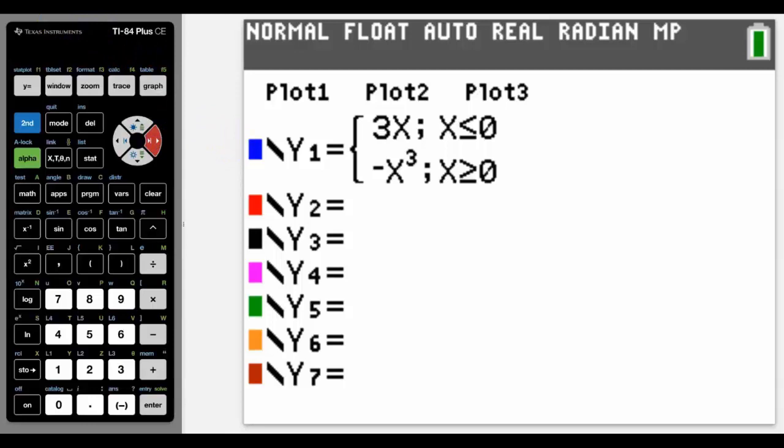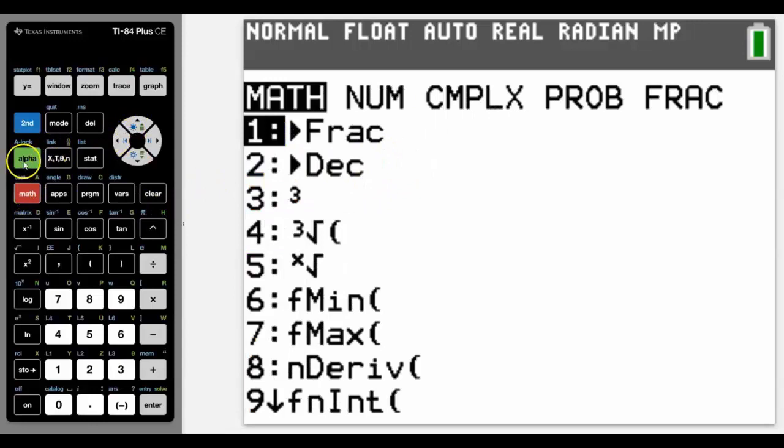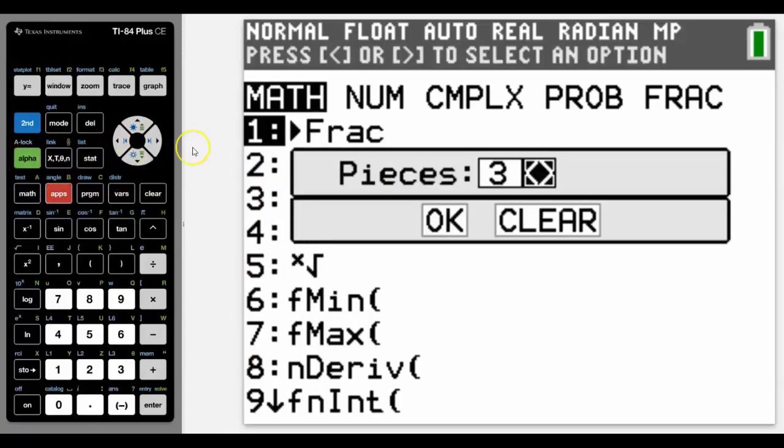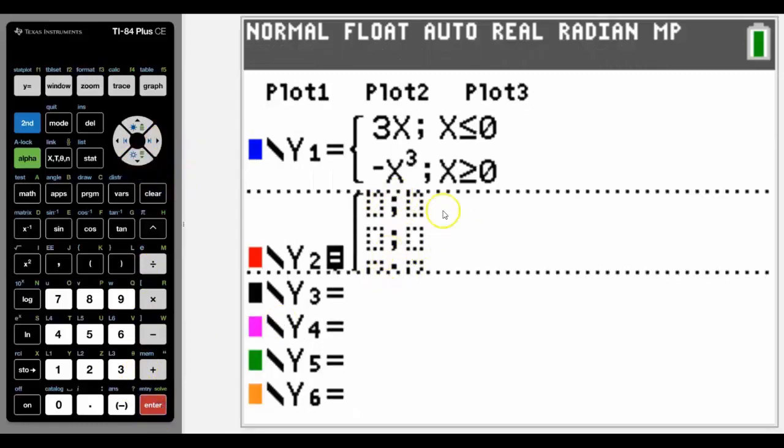...Asian rates and the different bands that there are for that. Now we can see in the Y equals screen that if we've got two parts to a piecewise, it fits in really nicely. But if we were actually wanting to do something bigger—let's say the Australian tax rate brackets—then there's five different levels for that.